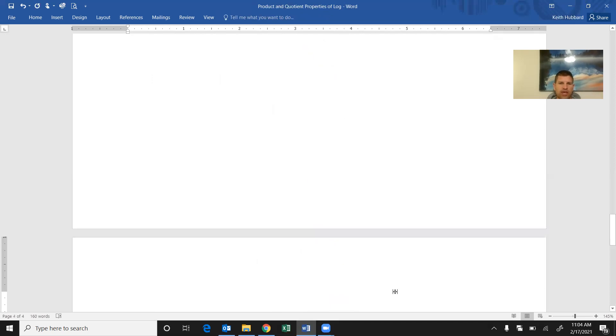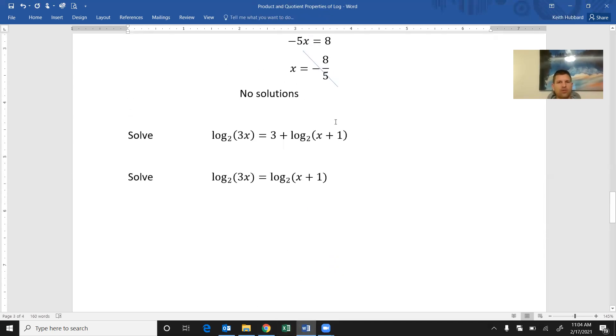Don't confuse that with this last problem. The last problem doesn't have the constant three—the constant three complicates it a lot. This bottom problem is actually a lot simpler. We don't have to convert to an exponential equation. This bottom one, we can just cancel the log base twos. Log base two of this equals log base two of that. Great. So this three, you're going to have to combine logs here; we just cancel the logs. And you just get three x equals x plus one, you'll solve that.